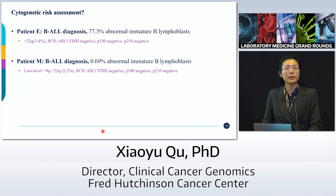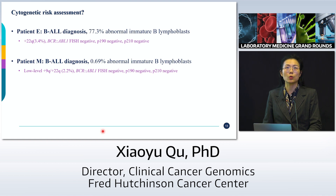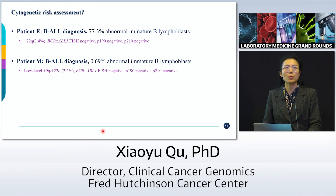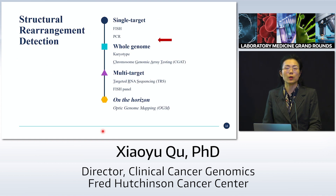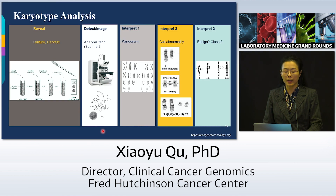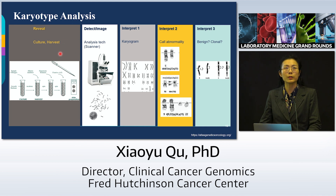We ran these assays for our two B-ALL patients. Patient E, despite 77% immature B blasts, showed 22Q gain in only 3.4% of cells with no BCR-ABL rearrangement — so this workup is clearly not complete. Patient M had no BCR-ABL fusion but showed gain of 9Q and plus 22Q. Is this hyperdiploidy? We need to run more studies, so we move to our whole genome assays.